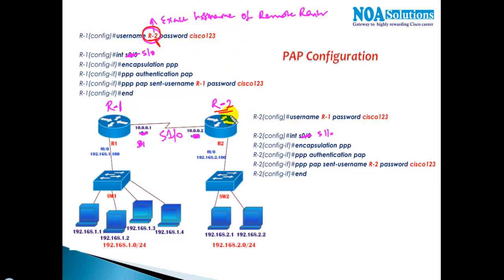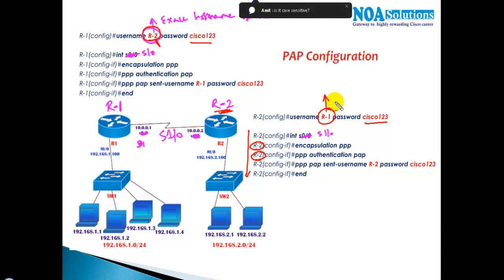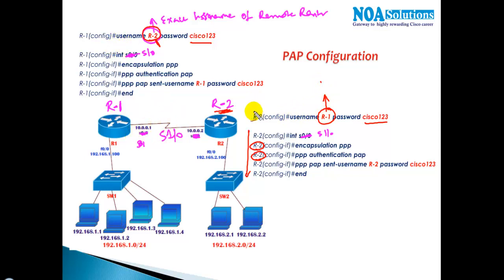The username has to be the exact hostname of the remote device and it is case sensitive. The password can be anything but must be the same on both sides. So on Router 2 we create username R1, and on Router 1 we create username R2 — ensuring the username exactly matches the remote hostname.